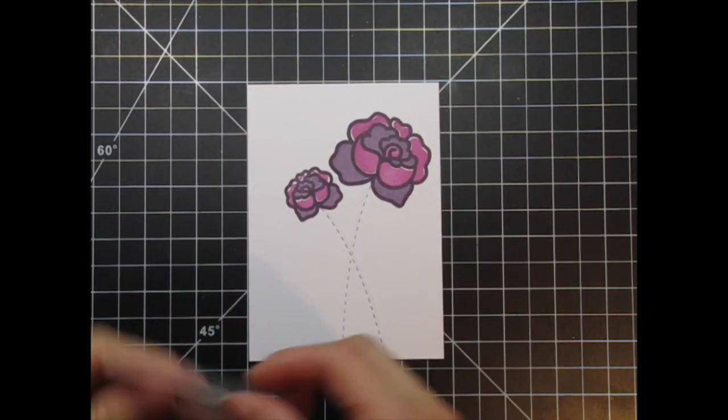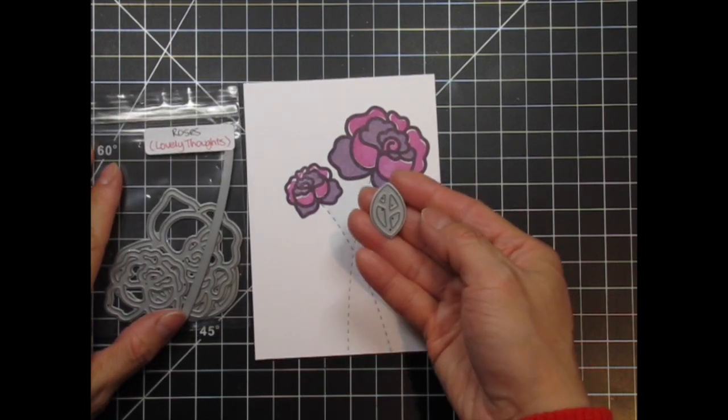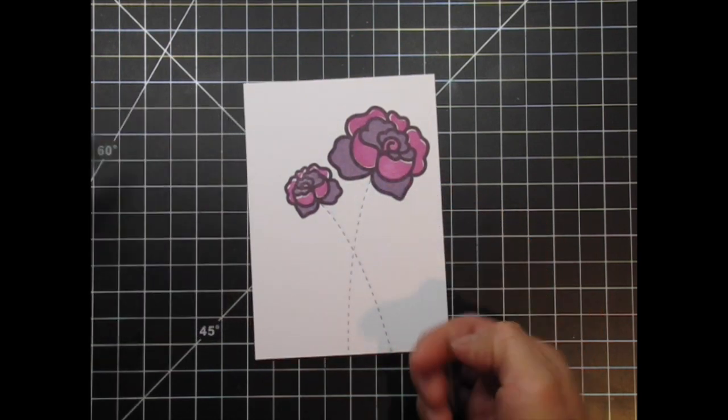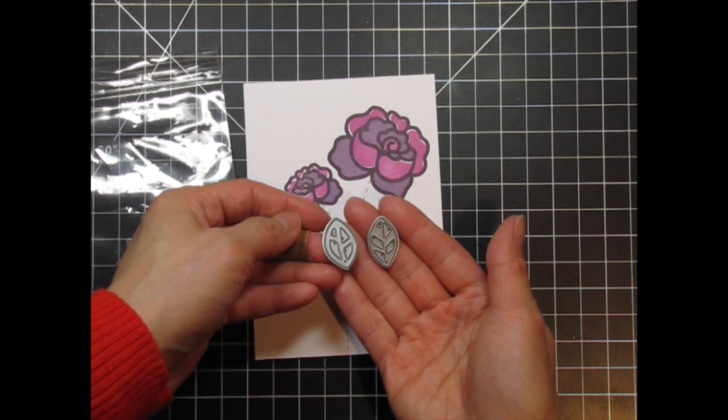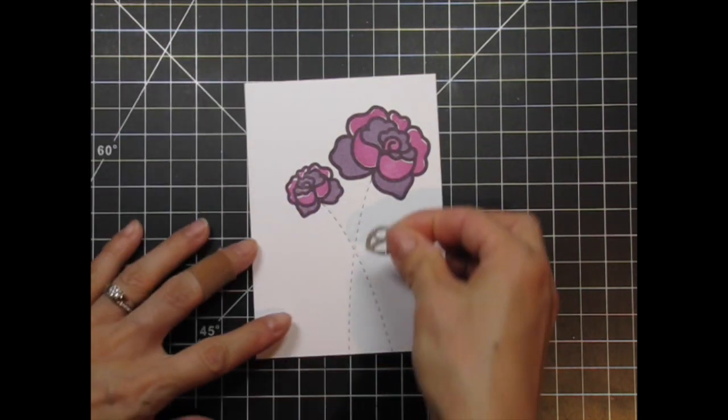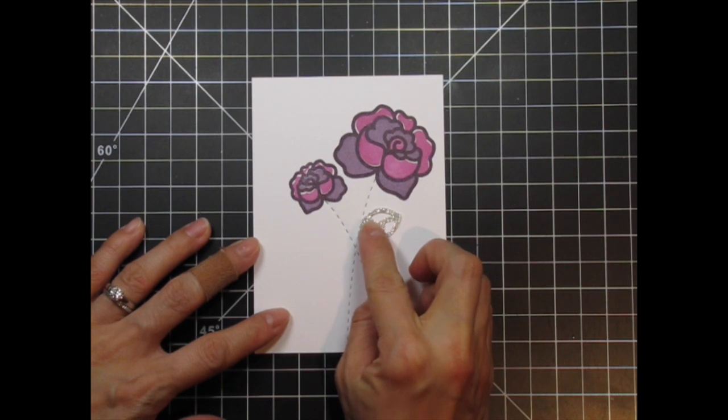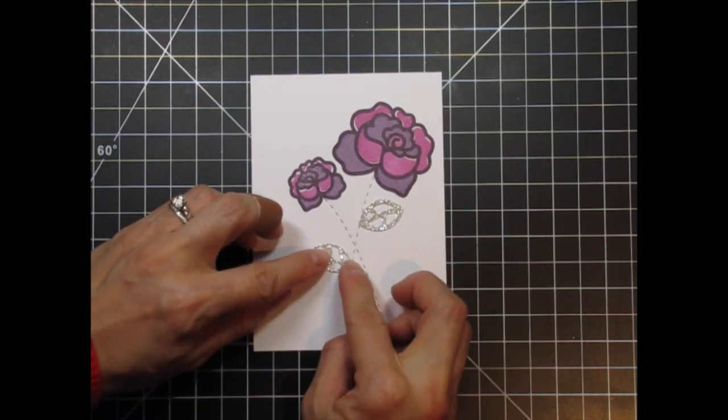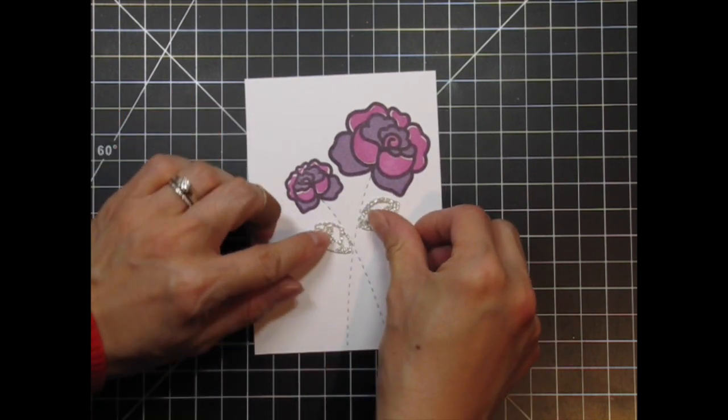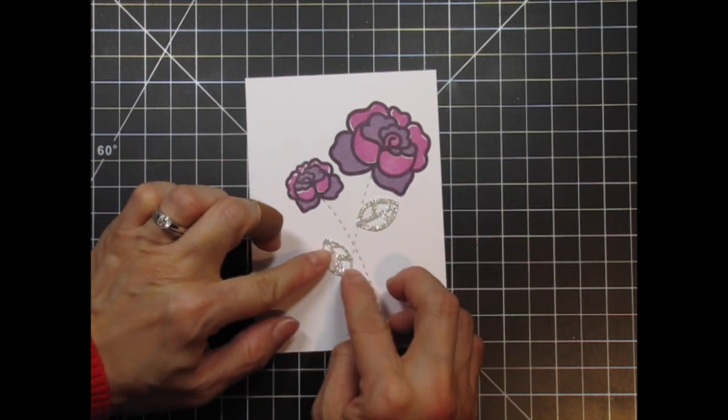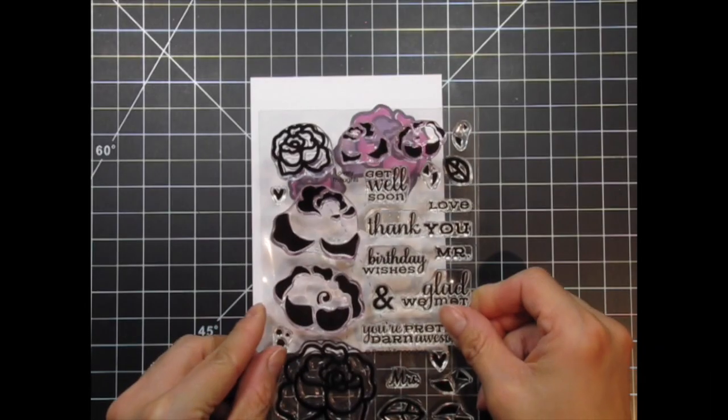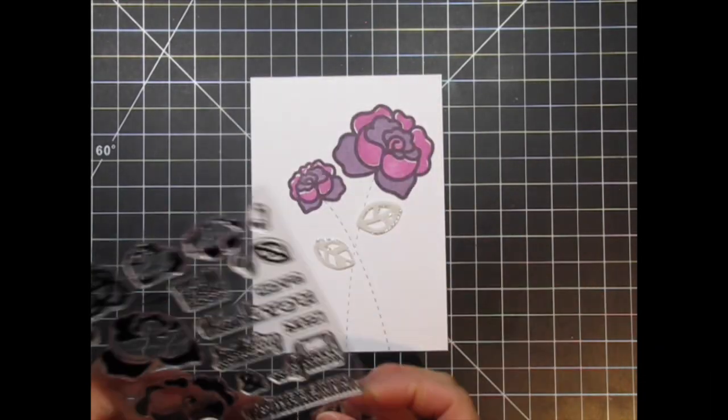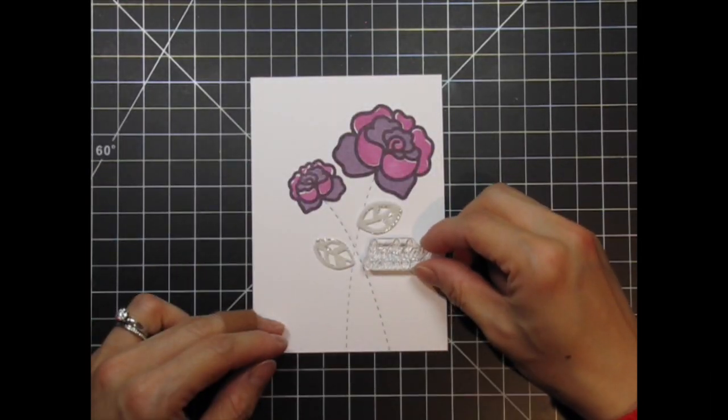When the stems are done, I use the small leaf die from the roses dies as well as a similar one from the flowers die collection. I cut these leaves from glimmer cardstock. My camera must have been off when I decided that the glimmer was too sparkly, so I recut the leaves in vellum for an overlay.